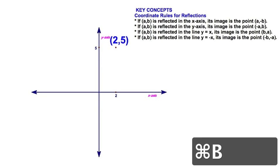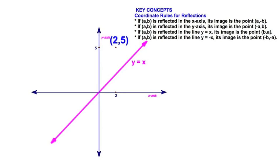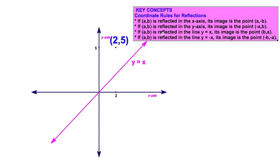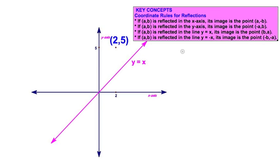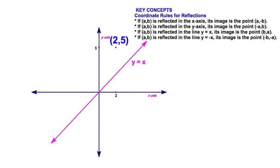Let's try something a little more exciting. We'll reflect over the line y equals x — again, a 45-degree line passing through the origin. Our rule says that the point (a, b) reflected over y equals x will reflect to (b, a). So (2, 5) will become (5, 2). And there's my reflection right there.